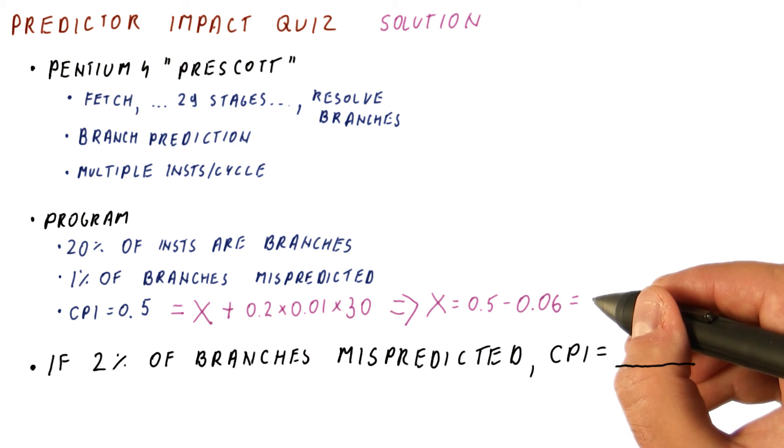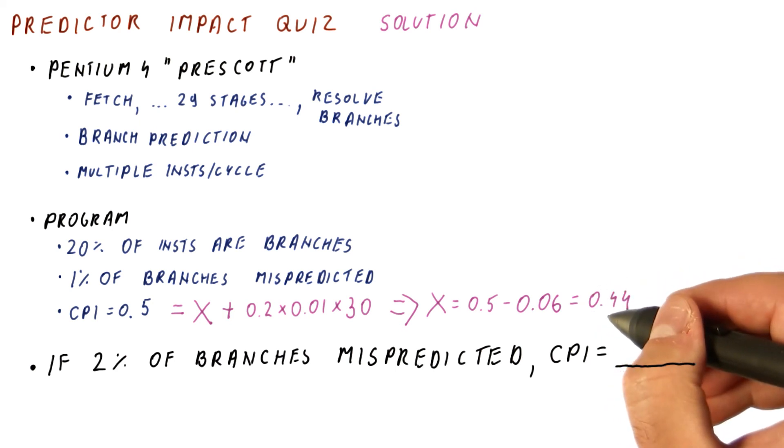So X here, the ideal CPI with a perfect branch predictor, would be 0.44.